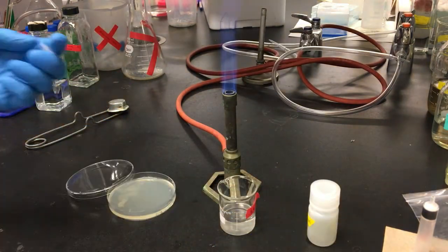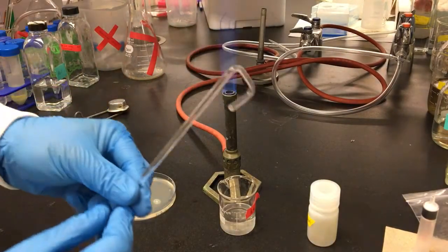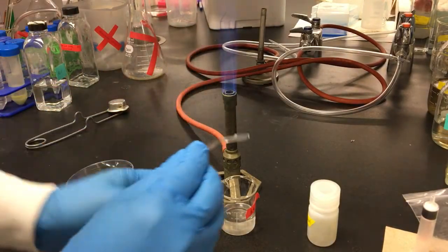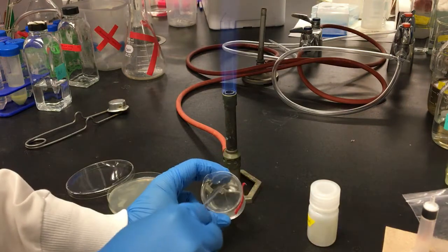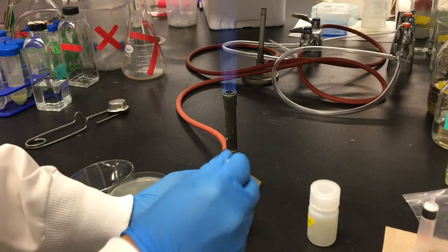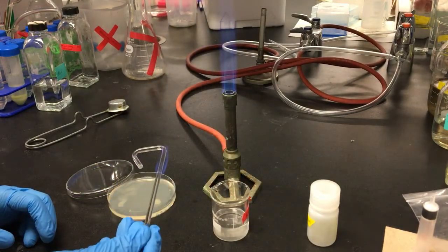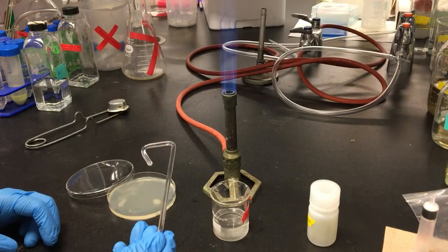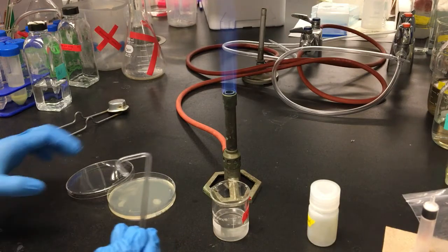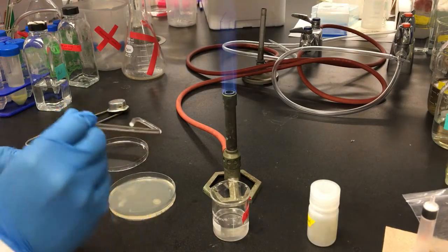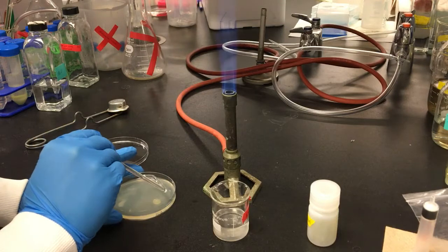I pipette the cells onto the plate and sterilize the spreader by dipping it into ethanol and lighting it. Then, I can spread the cells evenly on the plate.